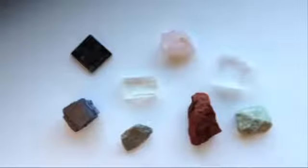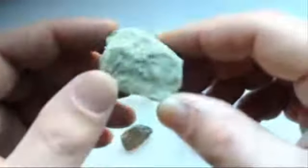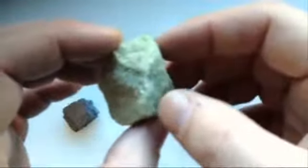Minerals break in one of two ways: cleavage or fracture. Fracture is when a mineral breaks randomly. If you look at this piece of olivine, you'll notice it has a jagged, irregular shape. It looks like it was just smashed into a random shape. This is referred to as fracture.